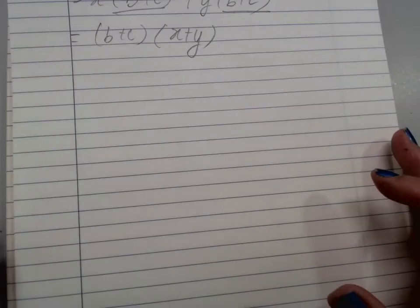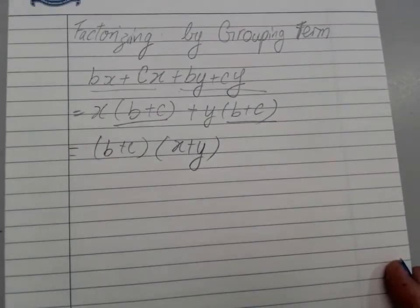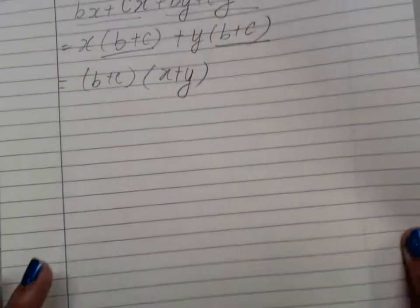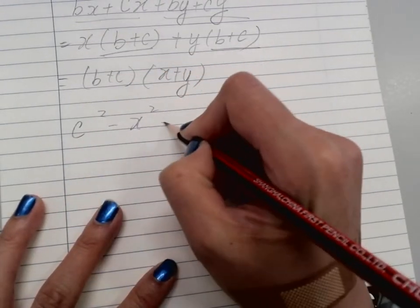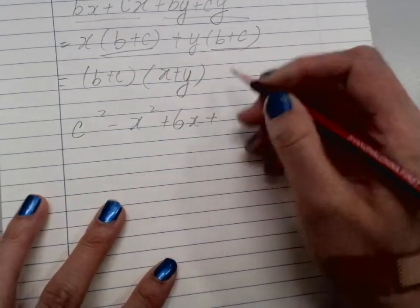Sometimes it might require a few more steps. So what I'm going to do is, we have a weird example. I got c squared minus x squared plus 6x minus 9.